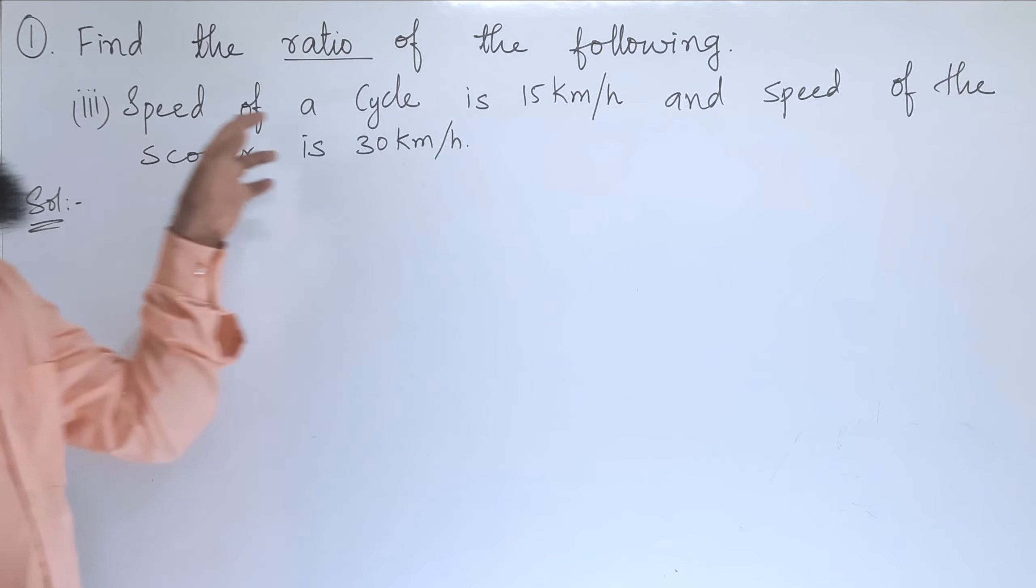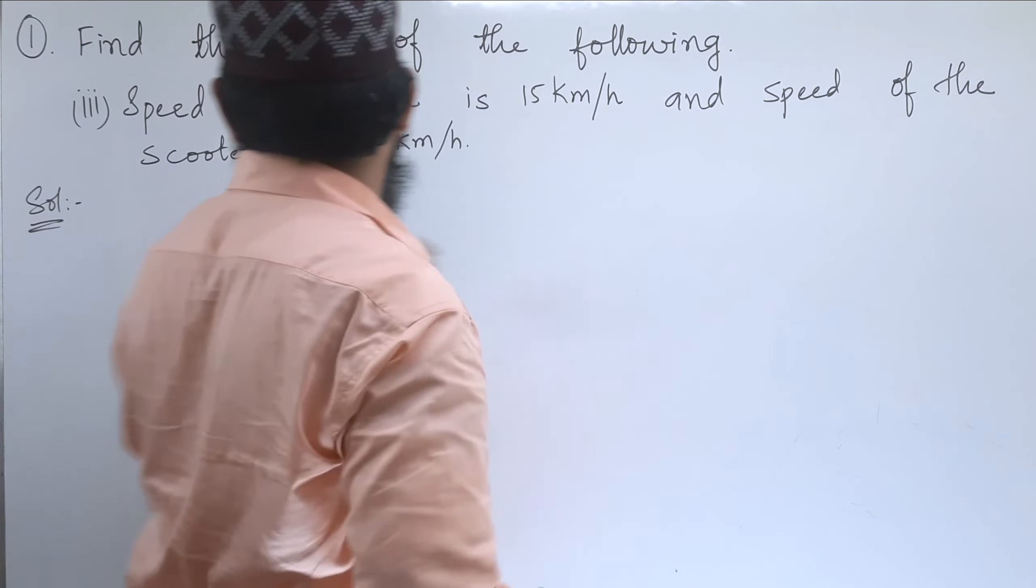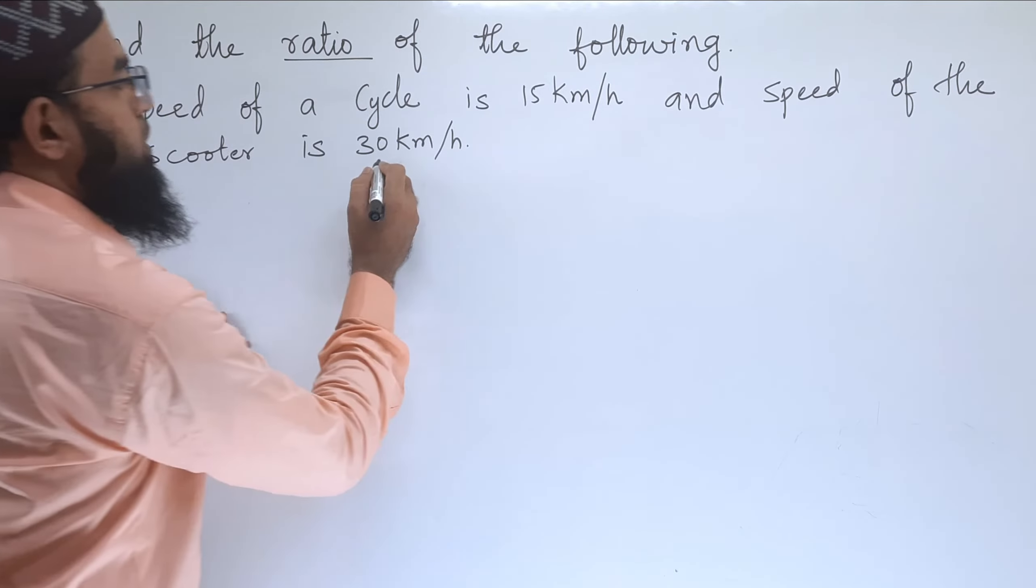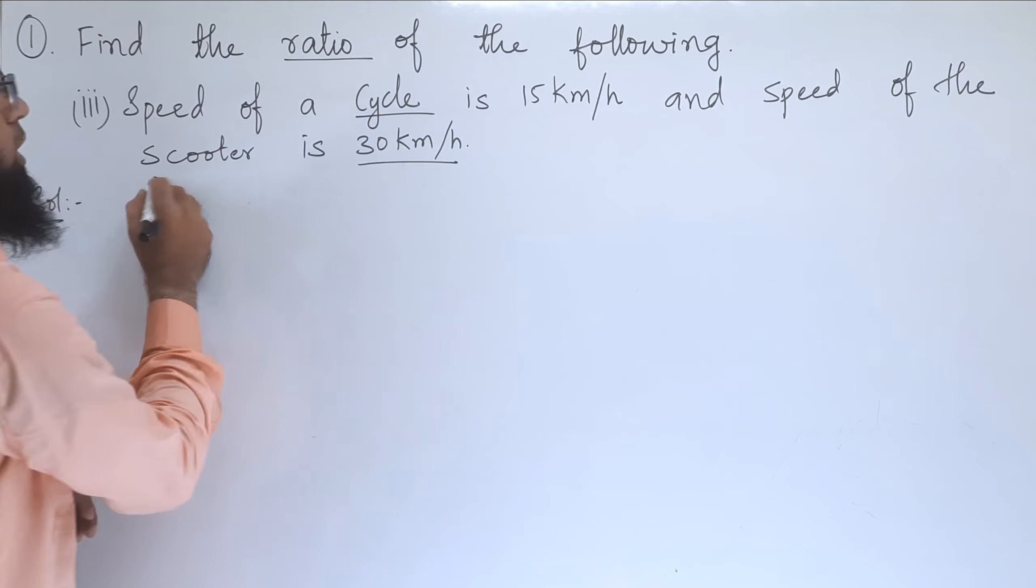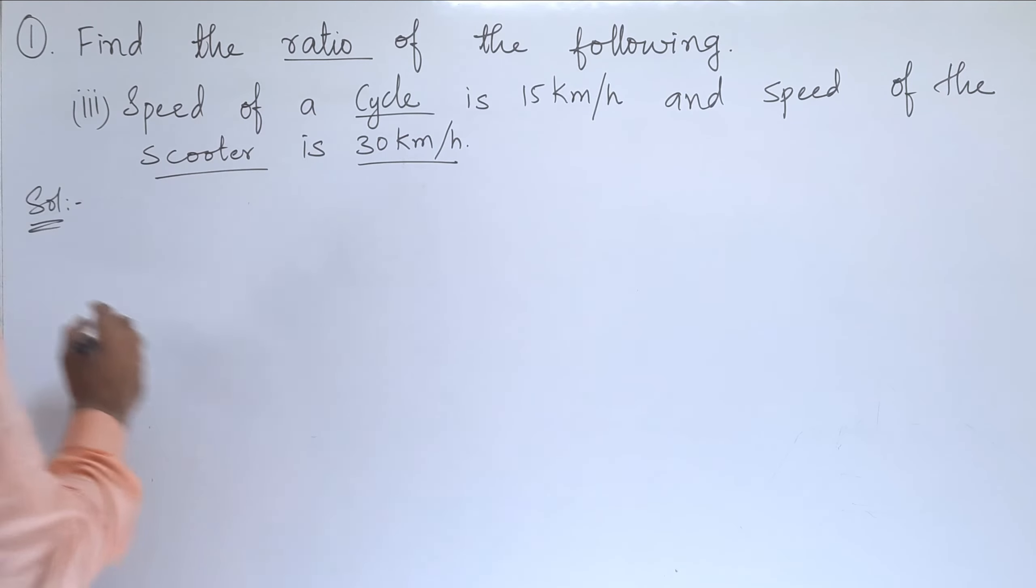Third bit, speed of a cycle is 15 km per hour and speed of the scooter is 30 km per hour. They have given the speeds of two things, that is a cycle and a scooter. So we need to find out the ratio of these two.